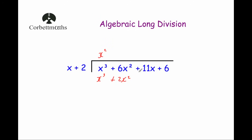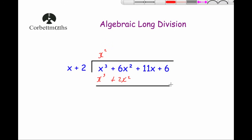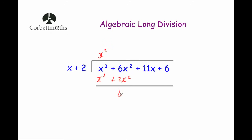Draw a line beneath to show you're subtracting. x cubed take away x cubed is zero. 6x squared take away 2x squared is 4x squared. And the 11x plus 6 — we're not taking anything away from those — so we just write plus 11x plus 6.